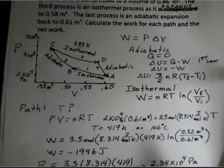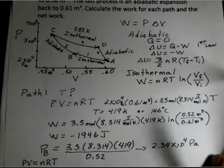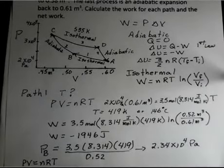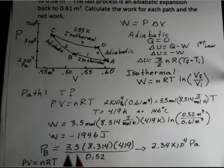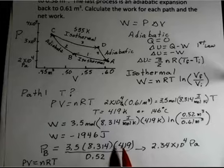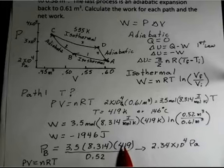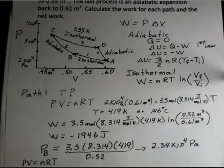What about the pressure at point B? Suppose we wanted to know that. We'd use the ideal gas law. Moles, gas constant, the temperature on the isotherm is 419 Kelvin. You must use Kelvin in the ideal gas law. 0.52 for the new volume, and we get a pressure there. That's using PV equals NRT. Let's go on to Path 2. Path 2 is adiabatic.